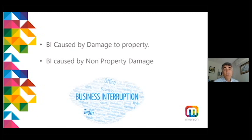Moving on to business interruption caused by non-property damage. This second type of policy provides cover for business interruption caused by a series of specified trigger events. If one of those events is satisfied, cover will attach to losses caused by that event, subject to other policy terms such as exclusions and financial limits. This type of cover typically falls into one of three categories: denial or prevention of access to your premises; an act of civil or statutory authority; and disease.